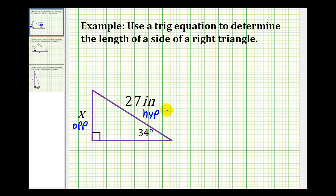So our trig equation is the sine of 34 degrees equals the ratio of x to 27 inches. We'll leave off the inches for now. I find it helpful to write this as a proportion, so I'll put the sine of 34 degrees over 1.